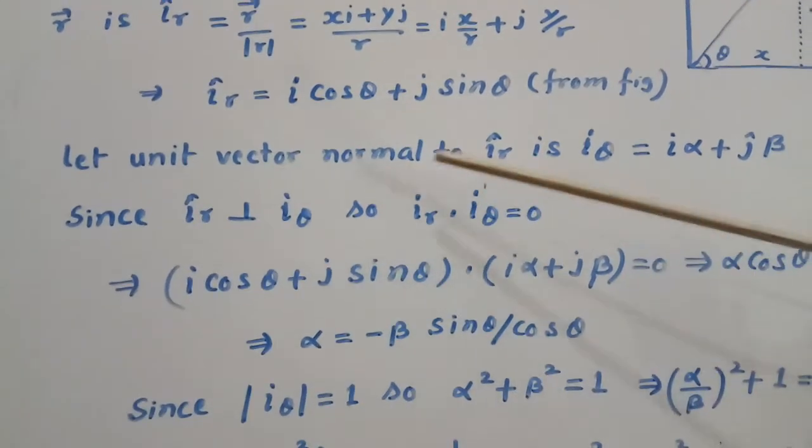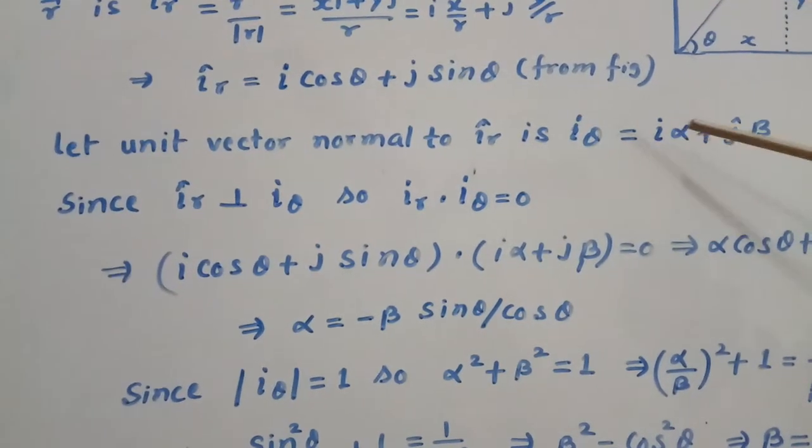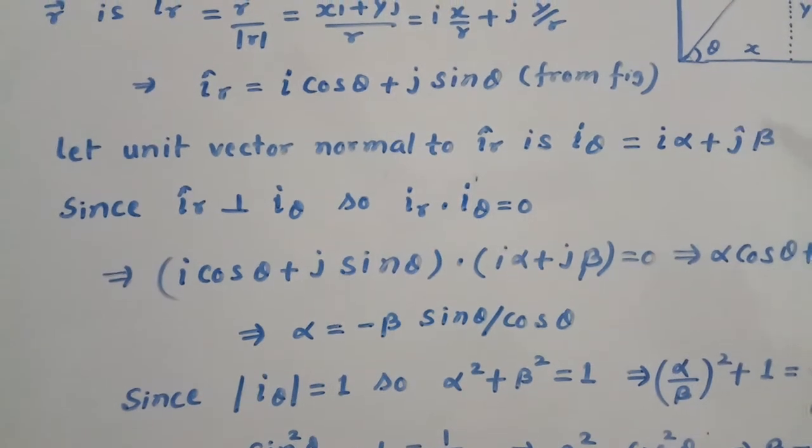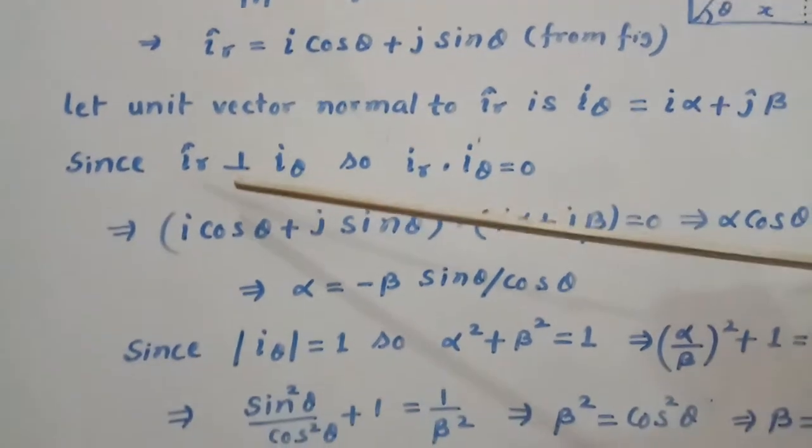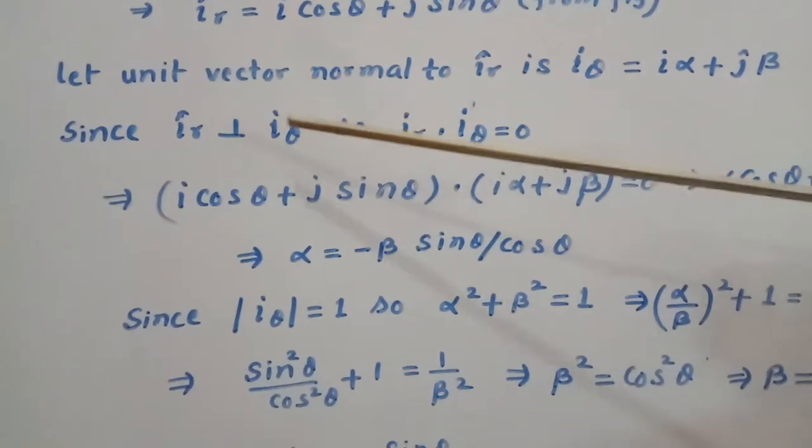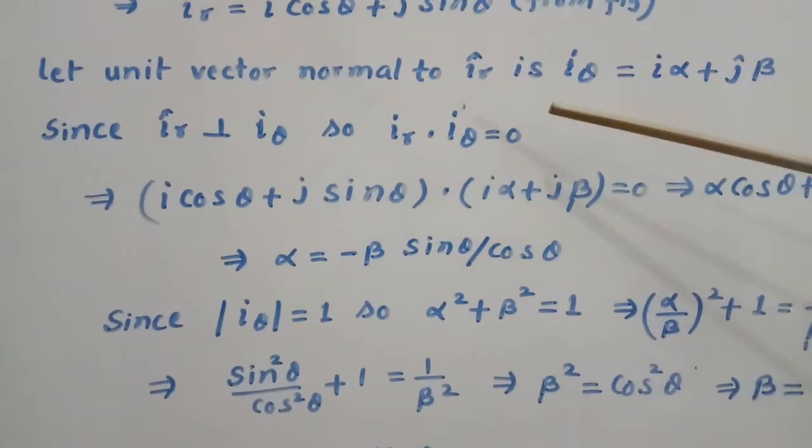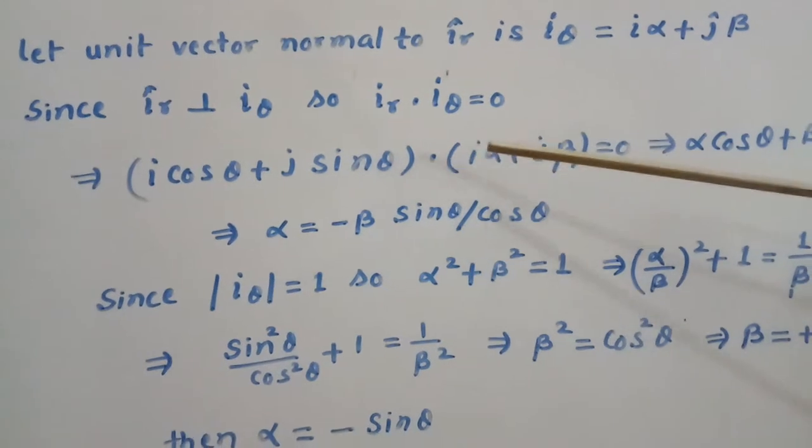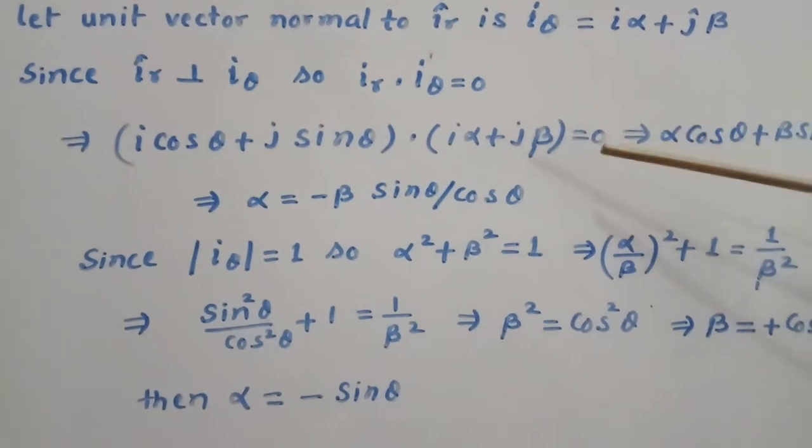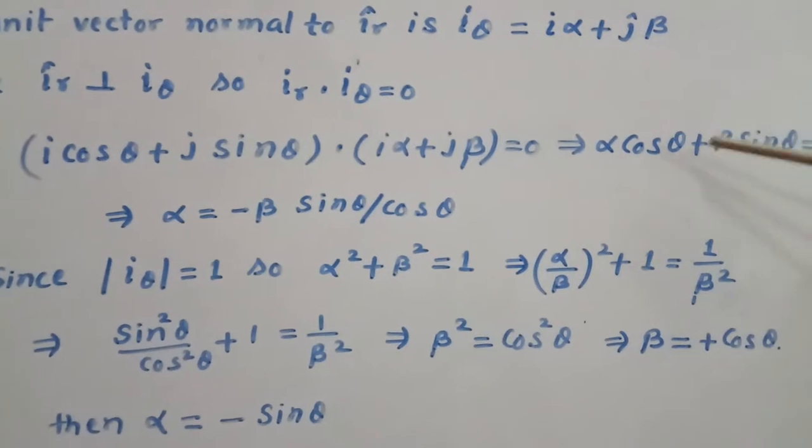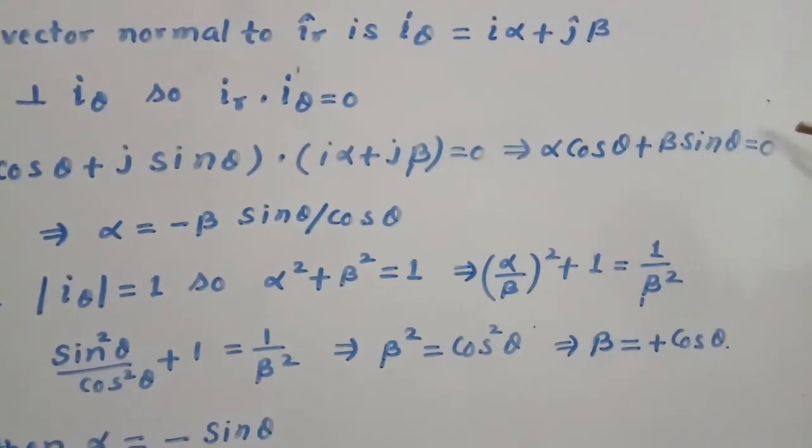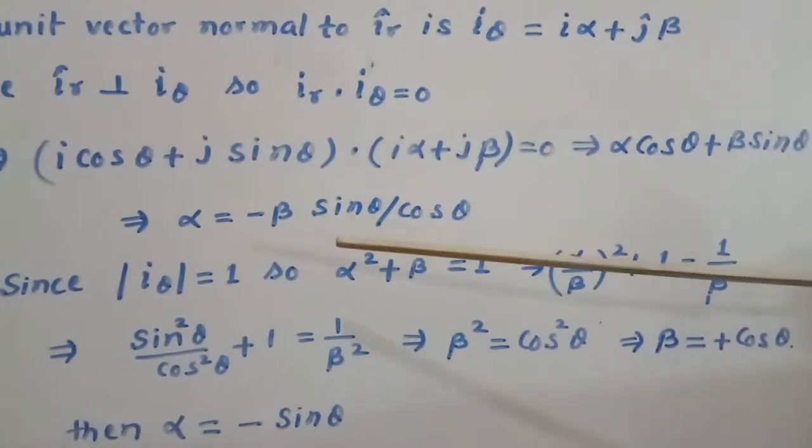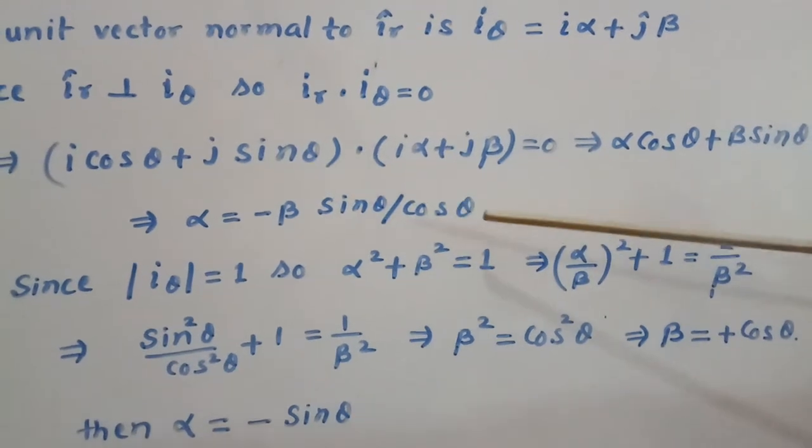Now let unit vector normal to i_r is i_theta, which is equal to i alpha plus j beta. Since i_r and i_theta are mutually perpendicular, their dot product should be zero. So we put the values: i cos theta plus j sin theta dot i alpha plus j beta equals zero. That gives alpha cos theta plus beta sin theta equal to zero, or alpha equal to minus beta sin theta upon cos theta.